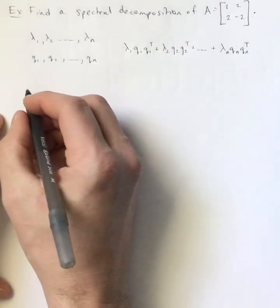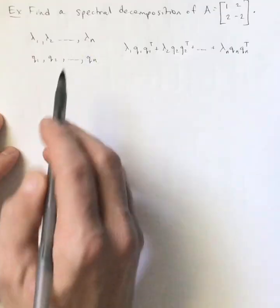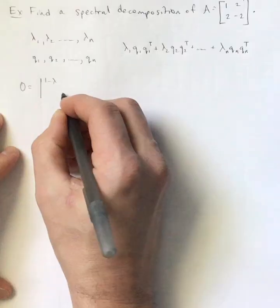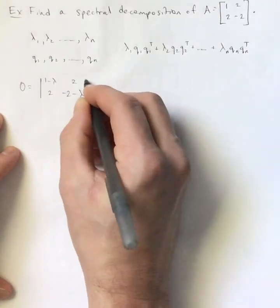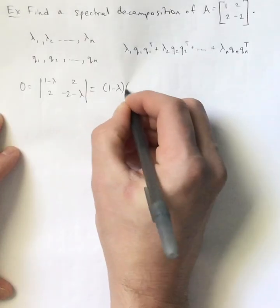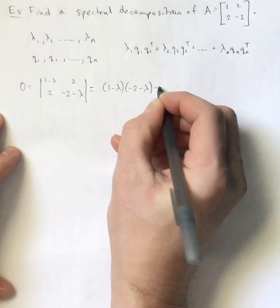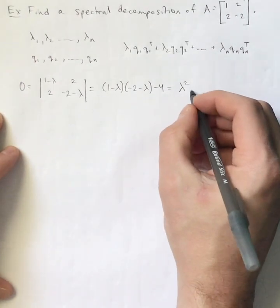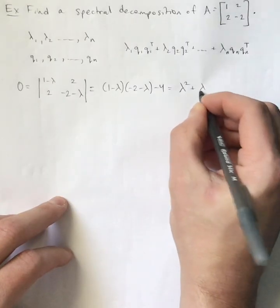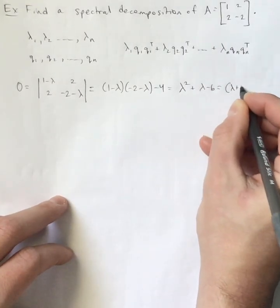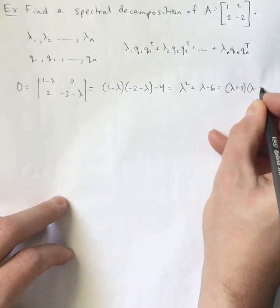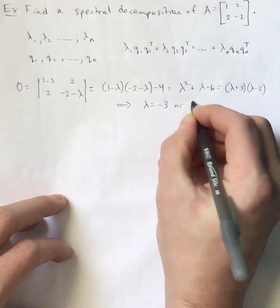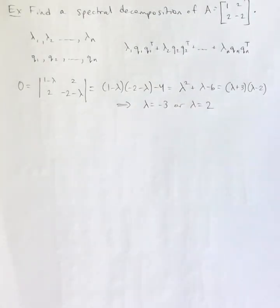So let's see how to do that for this. We do need to find the eigenvalues for this first. So let's start by setting that up in the way that we do that. And so what I end up getting when I multiply all this out, the characteristic polynomial, is lambda squared plus lambda minus 6. And that is lambda plus 3 times lambda minus 2. So I get lambda equals negative 3 or lambda equals 2. Those are my two eigenvalues.